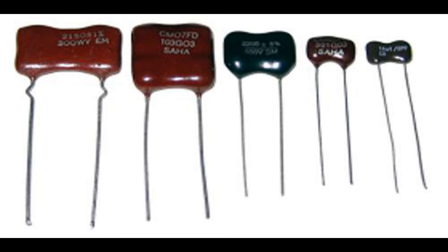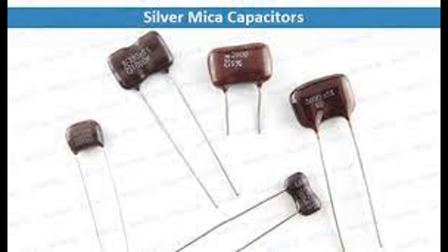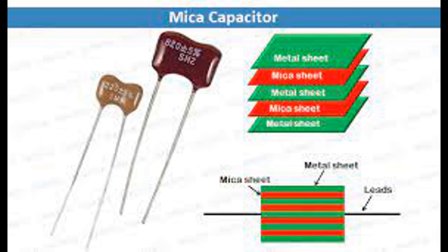Precision and measurement equipment: mica capacitors are commonly used in precision electronic equipment and measurement instruments where accurate and stable capacitance values are essential. Their temperature stability ensures precise and reliable operation, making them suitable for frequency standards, calibration equipment, and high precision test instruments. In industrial applications and power electronics, mica capacitors are used in motor drives, power converters, and other high-power applications where temperature stability is critical. Mica capacitors with known temperature characteristics are also used in temperature compensation circuits to offset temperature-dependent variations in other electronic components.